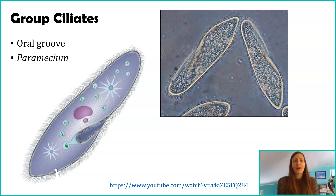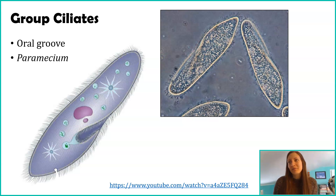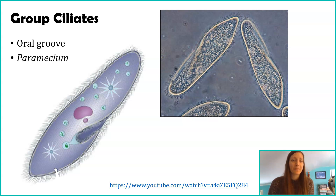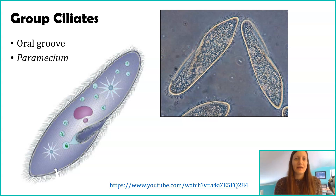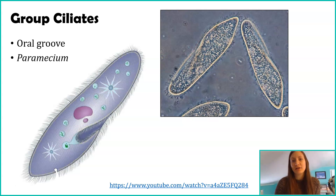The next group of organisms we'll talk about are group ciliates. These are very common in freshwater ecosystems and very easy to find. Probably the most well-known one is Paramecium — again italicized as a genus name, including many different species that all share very common characteristics. Inside the word 'ciliates' is 'cilia.' Cilia are small hair-like extensions that come out of a cell that help that cell to move. There are other types of cells that might have cilia, but they may use them for a slightly different function.